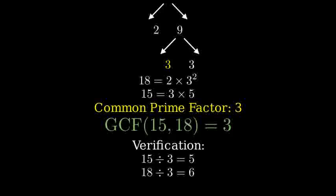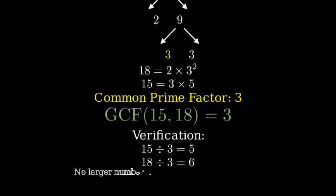Both of these divisions result in whole numbers confirming that 3 is a common factor, and if we tried any larger number, it wouldn't divide evenly into both 15 and 18, making 3 the greatest common factor.